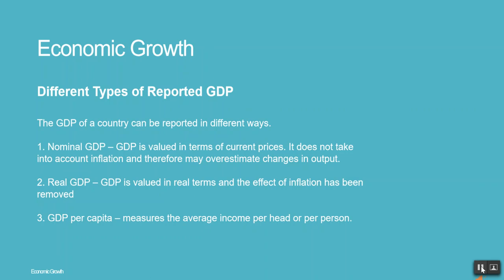The GDP of a country can be reported in different ways. 1: Nominal GDP — GDP is valued in terms of current prices. It does not take into account inflation and therefore may overestimate changes in output. 2: Real GDP — GDP is valued in real terms and the effect of inflation has been removed.